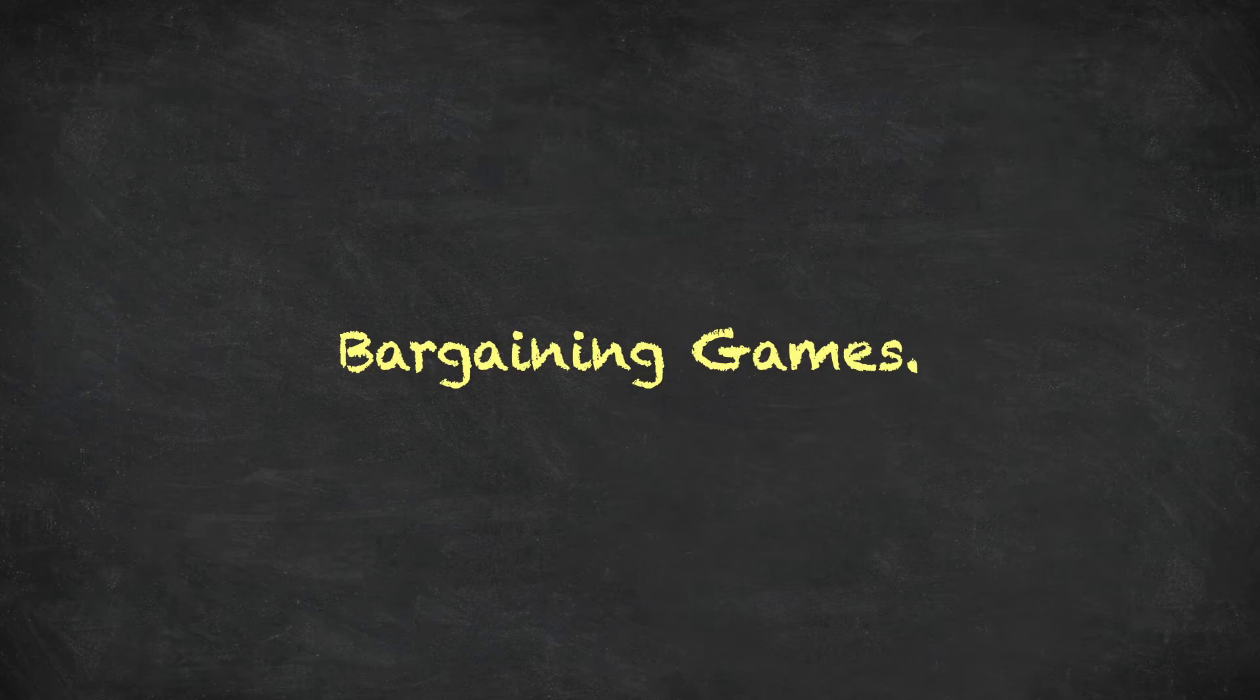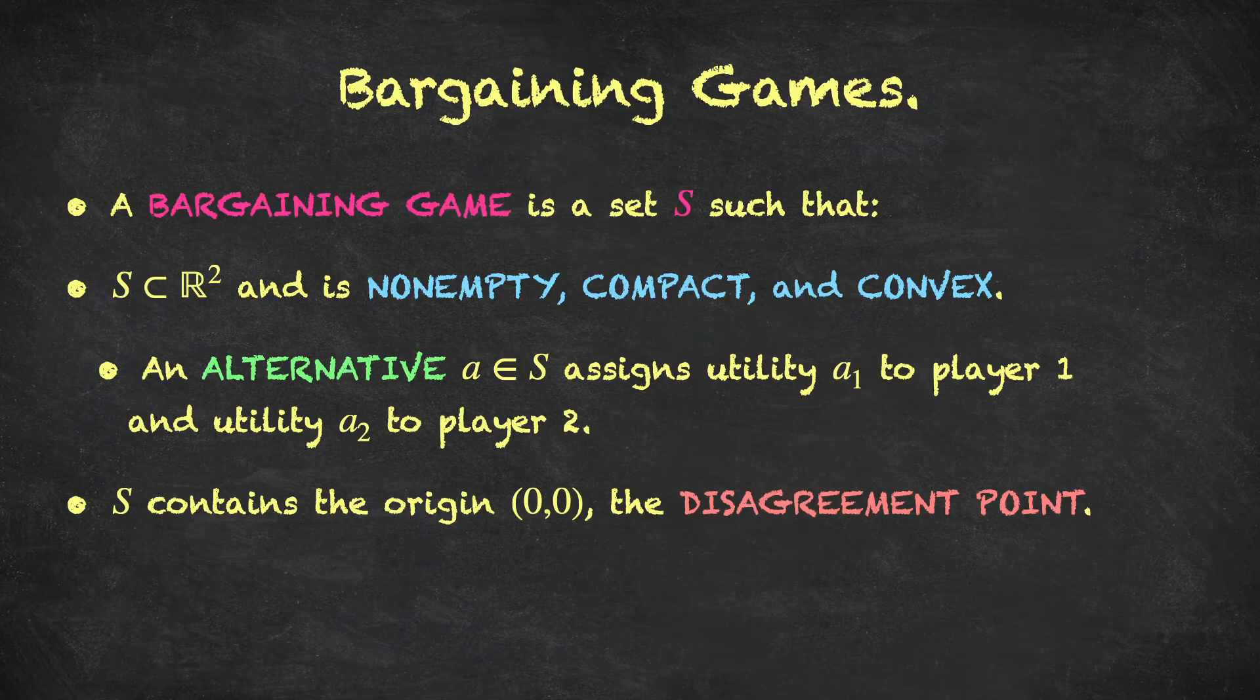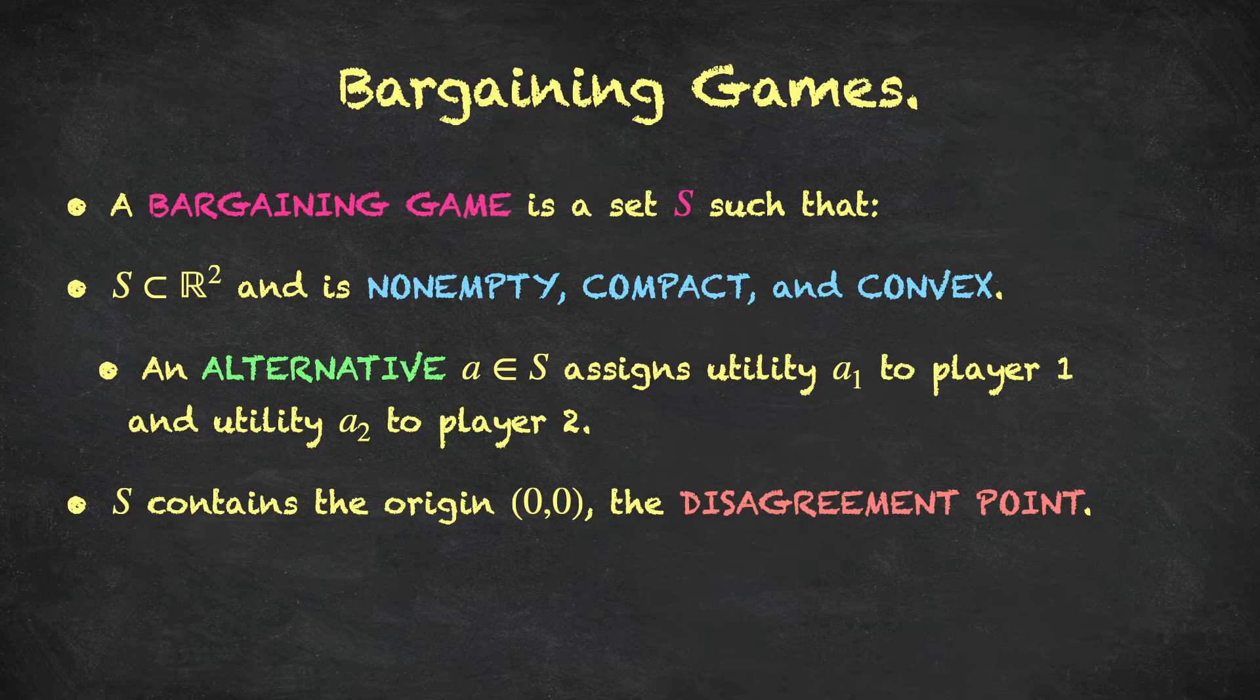So, let's introduce the idea of a bargaining game. The brilliance of Nash's approach is that it abstracts away from all unnecessary details. So, we're not going to model the bargaining process as such. Rather, we're simply going to describe a bargaining game as a set of utility pairs. So, I get some utility and you get some utility, and there are various possibilities within that set. So, a bargaining game is a set.